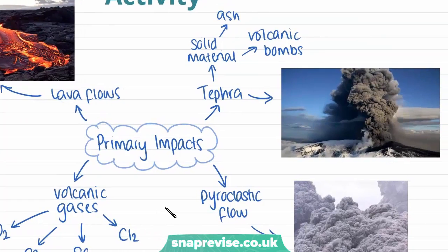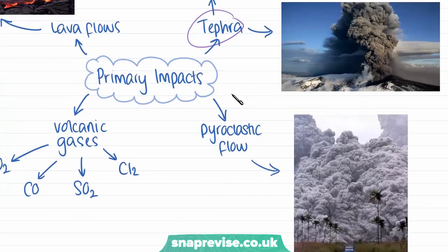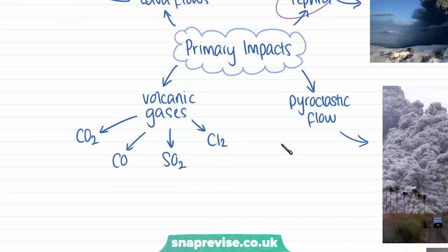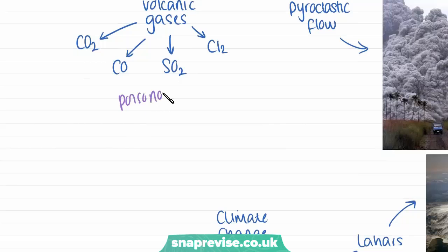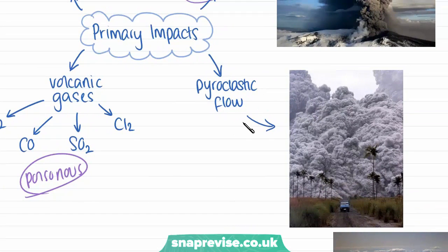Then we have tephra, which is a word to describe any solid material ejected from the volcano — this can be ash or volcanic bombs, which are small circular rocks made of volcanic rock. We also have volcanic gases emitted from the eruption, including carbon dioxide, carbon monoxide, sulfur dioxide, and chlorine. A lot of these gases are very poisonous and have a lot of effects on people who breathe them in, and can kill people through inhalation.